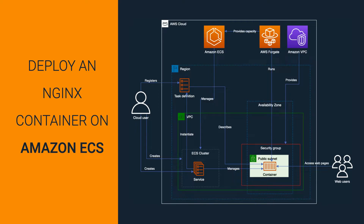In this project, we're going to deploy an HTTP server in a Docker container using the Amazon ECS. To do so, we're going to build this architecture step by step.